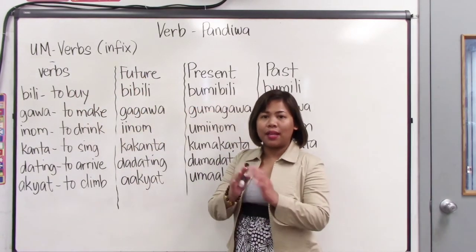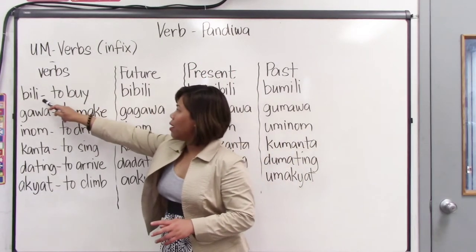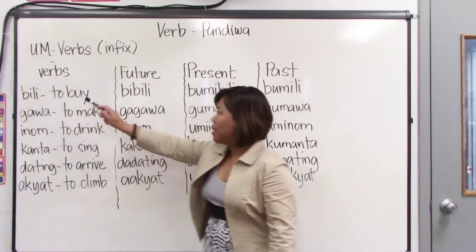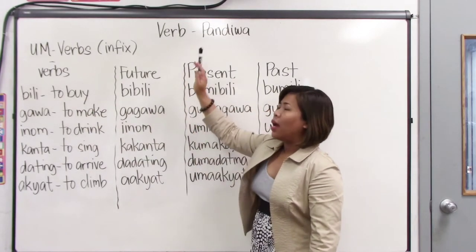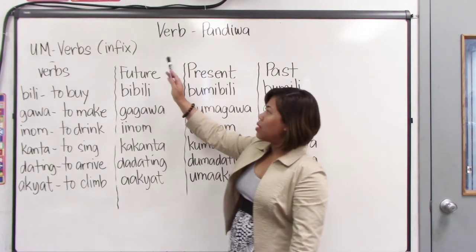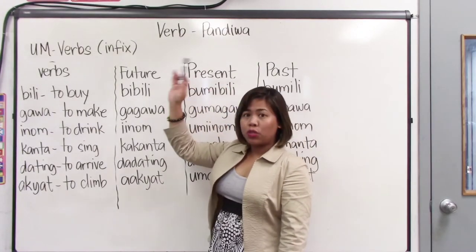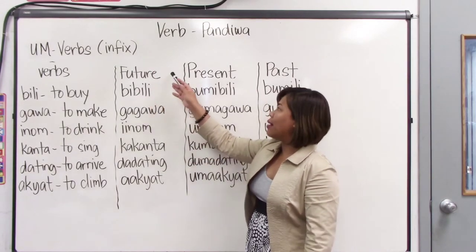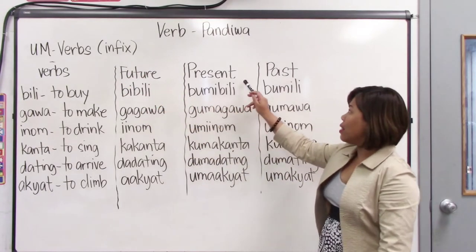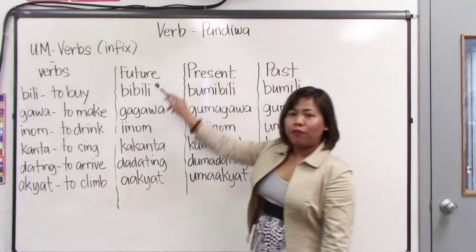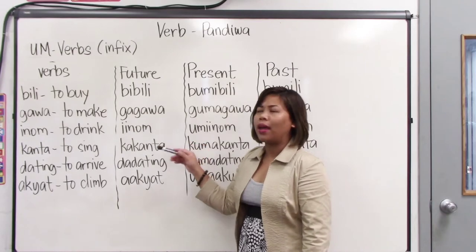We use the affix um, and this is different from the first two we've studied. The mag and the ma are prefixes. The um is an infix — it means it is placed in between the letters of the word. Let's look at the first verb: bile. Bile means to buy. Another difference: um is very different from the mag and ma verbs. Those prefixes are added in the future tense of the verb, but um is added in the present and past tense only.